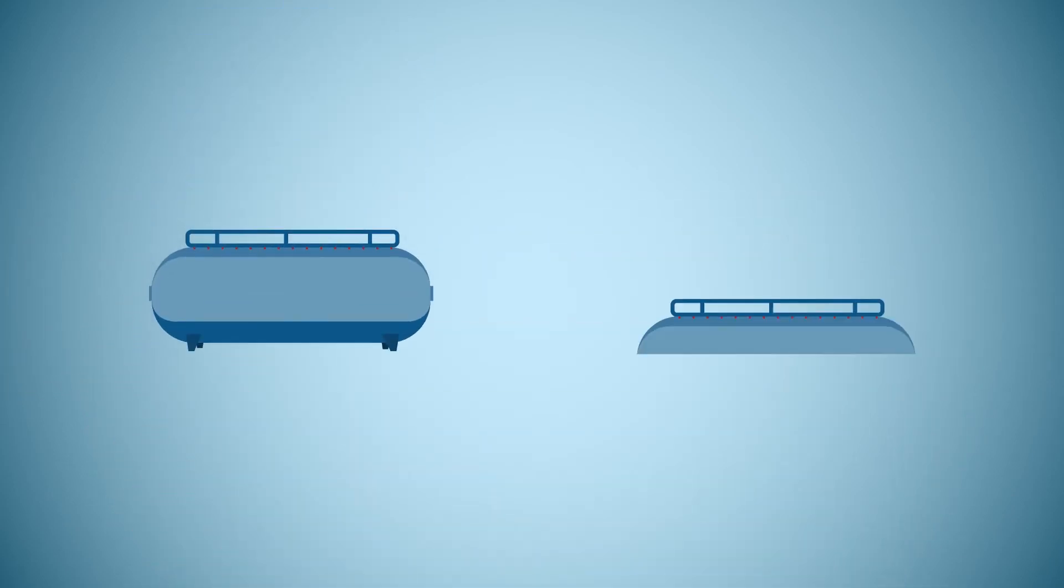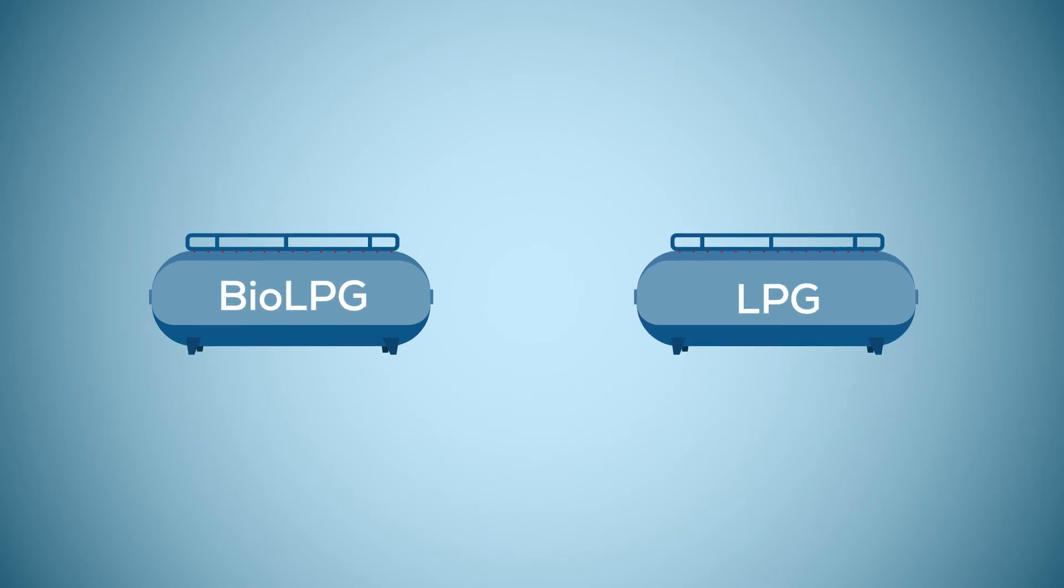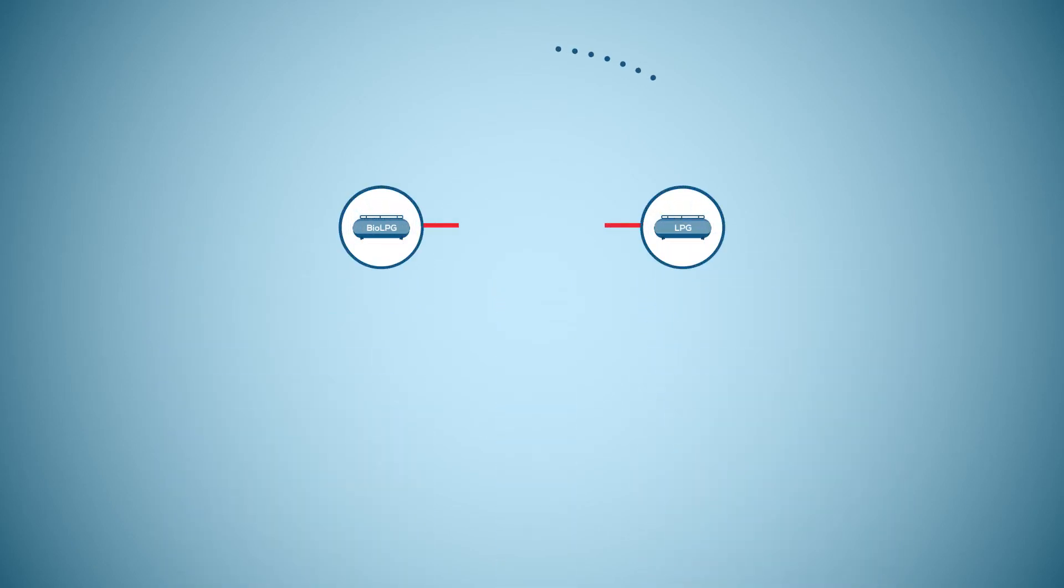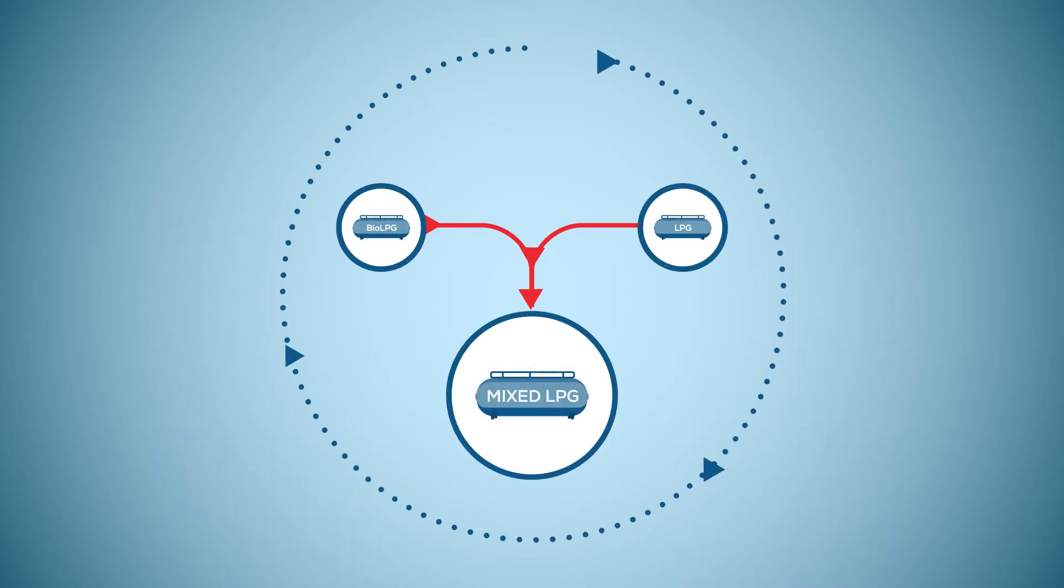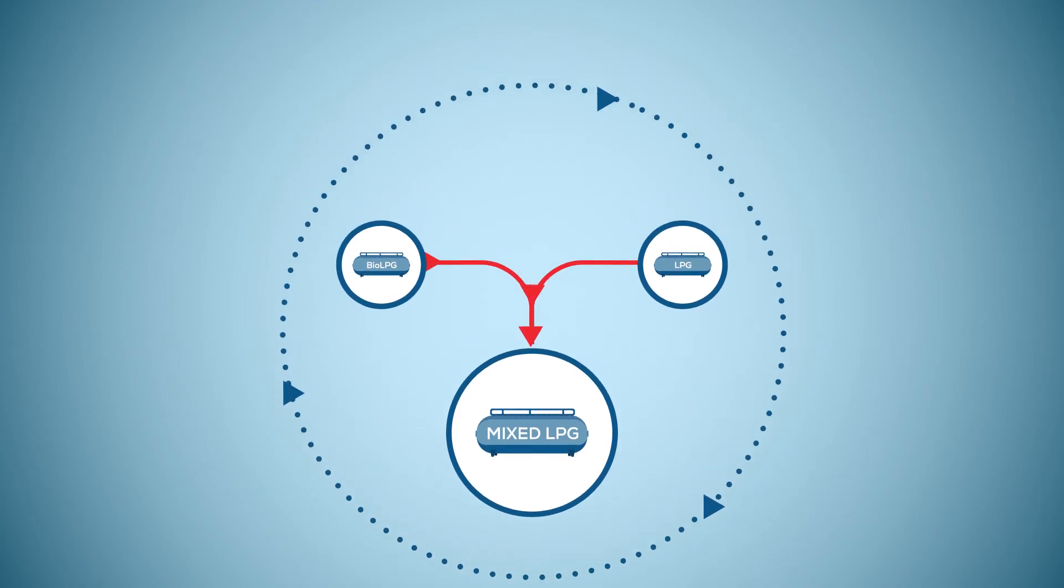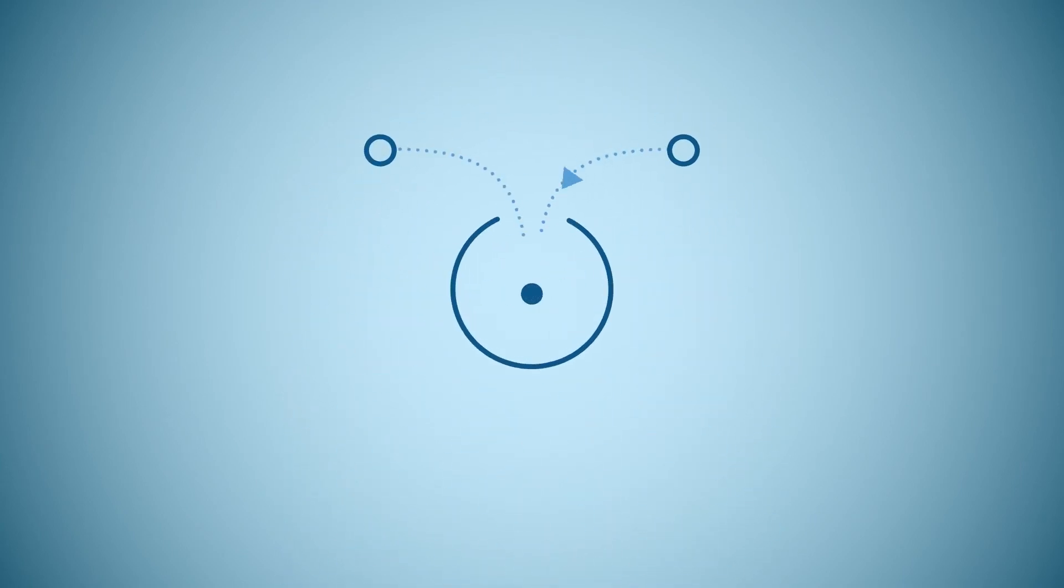Bio-LPG is made in a different way, but the actual product is chemically the same as conventional LPG. We can therefore mix the two and make the supply chain as efficient as possible. And we use a method called mass balance.